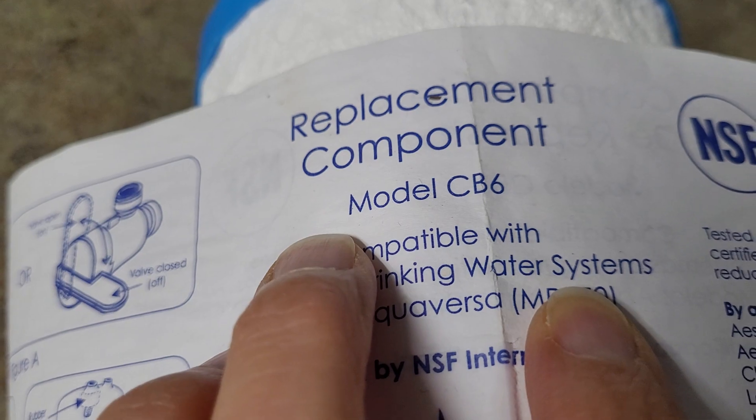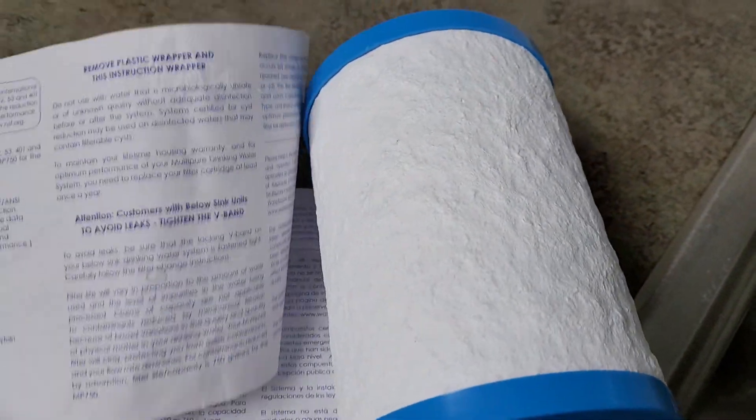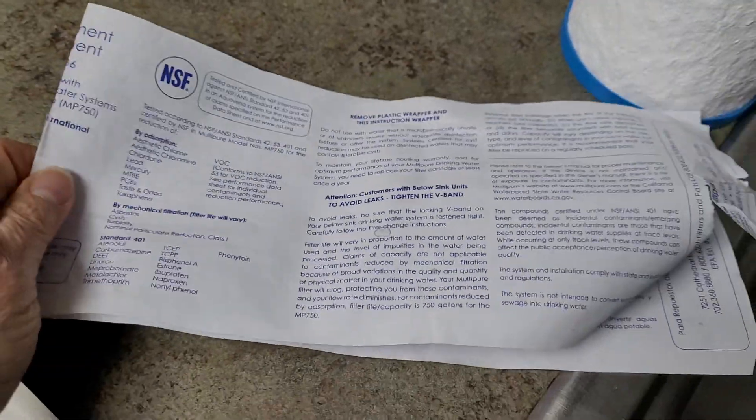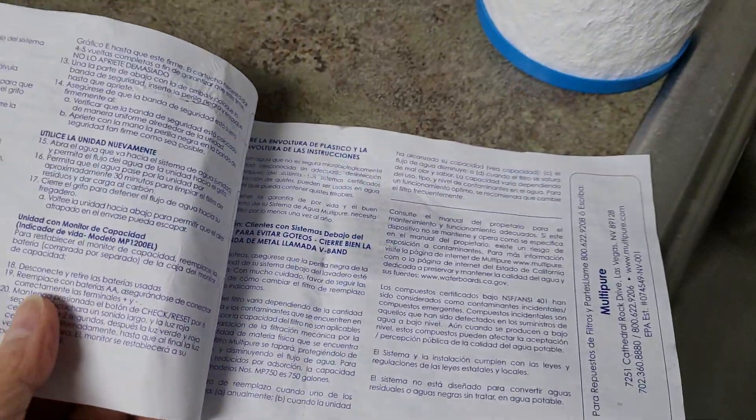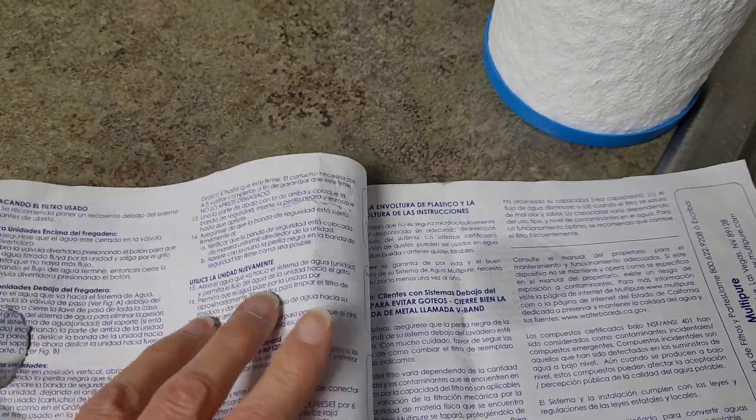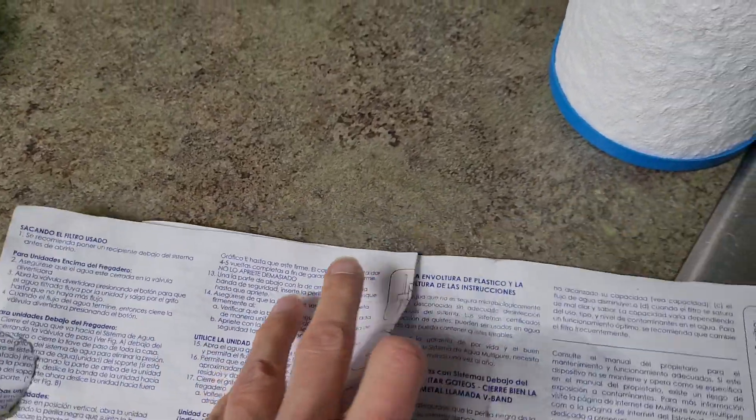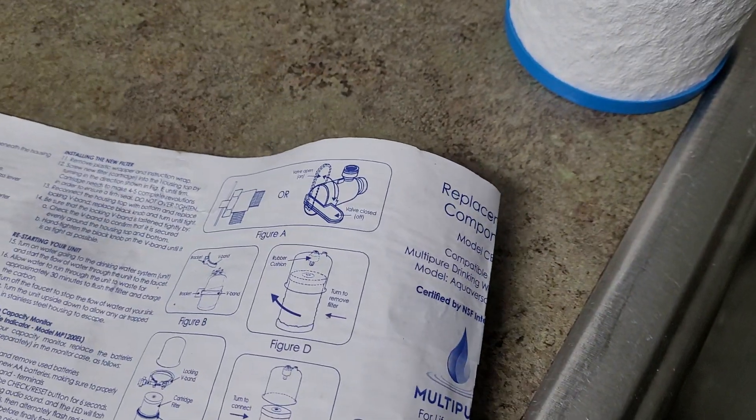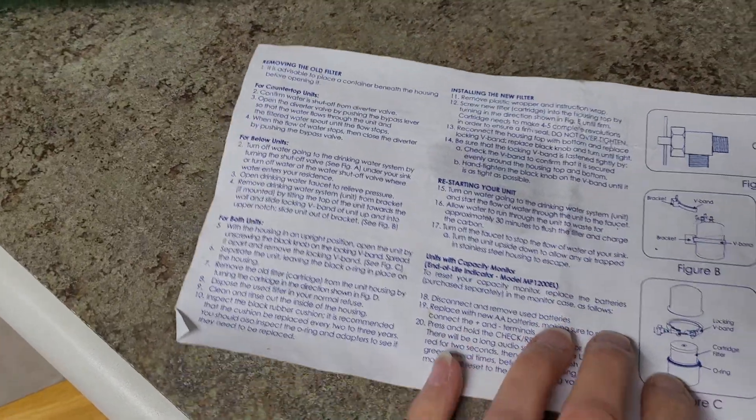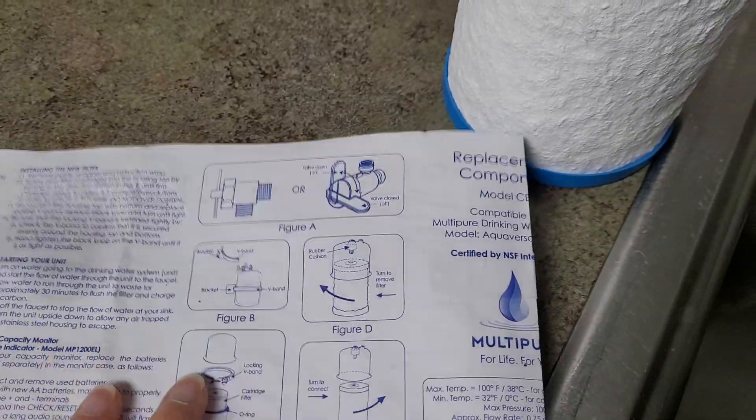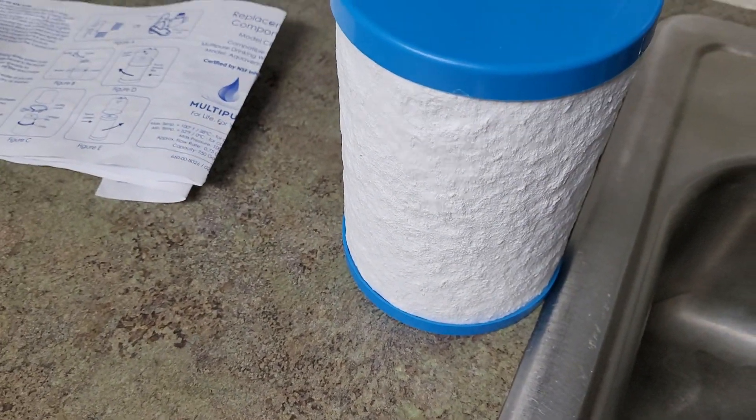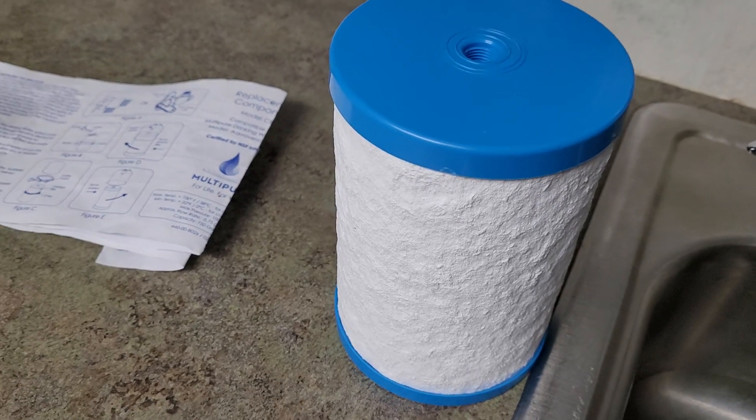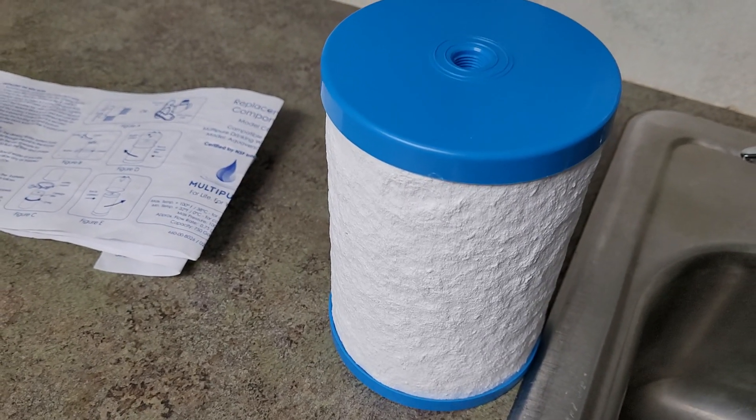This paper wrap around the filter has perfectly clear and easy-to-follow directions in both Spanish and English, so pick your preferred language. First thing you want to do is get your housing unit ready to take out your old filter cartridge and put in your new one.